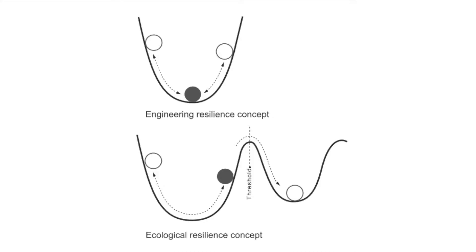Ecological resilience is envisioned as a ball in a valley: with each disturbance the ball is pushed out of the equilibrium, but will roll back to its original position. I have talked about productivity, stability, and resilience, but you have probably already figured out that ecosystems are never really stable. They are not engineering structures that are solid and stay in place. Dynamics form an intrinsic part of ecosystems.